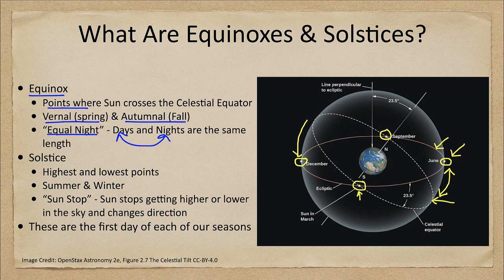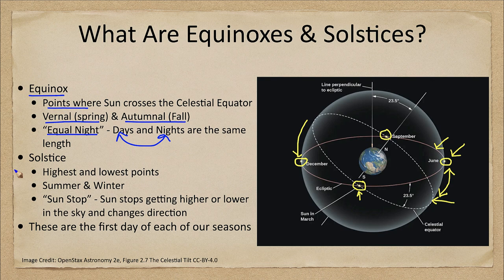June is when the sun is highest in the sky and December is when it is lowest. This is being discussed from a northern hemisphere perspective — these would be switched in the southern hemisphere, where in June the sun would be lowest and in December it would be highest. Remember that seasons are reversed between the northern and southern hemispheres.